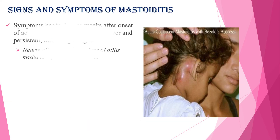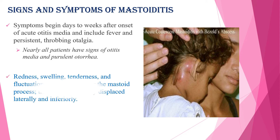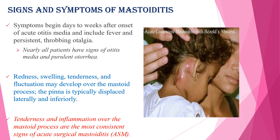Signs and symptoms of mastoiditis include: most of the time symptoms begin days to weeks after onset of acute otitis media and include fever and severe otalgia. Nearly all patients have signs of otitis media and purulent otorrhea. Redness, swelling, tenderness, and fluctuation may develop over the mastoid process, and the pinna is typically displaced laterally and inferiorly. Tenderness and inflammation over the mastoid process are the most consistent signs of acute mastoiditis.